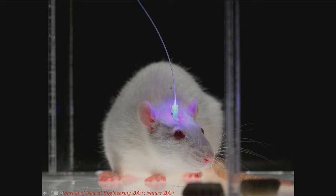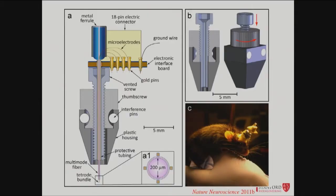We built fiber optic probes that are even thinner than the deep brain stimulation electrodes used in patients — they can be 200 microns in diameter. We've put electrodes on them as well so we can both record and generate a closed-loop stimulation device. They weigh less than two grams, and a freely running mouse can carry them.